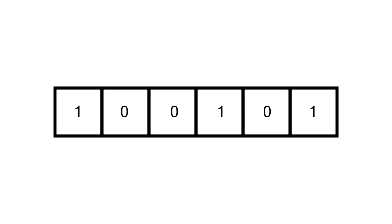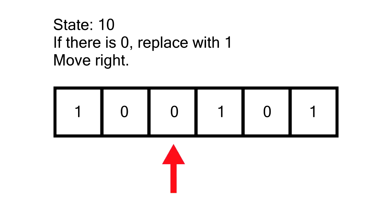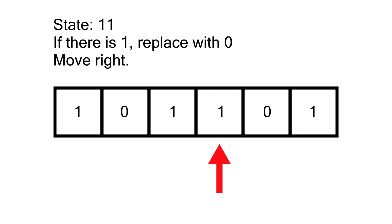For example, it is now at state 10, and if there is a 0, it will replace the 0 with 1 and move one cell to the right and go to state 11. Depending on the particular state, it will replace the number on the cell with the rules it was given, and shifts the head left or right until it is at the halt state.